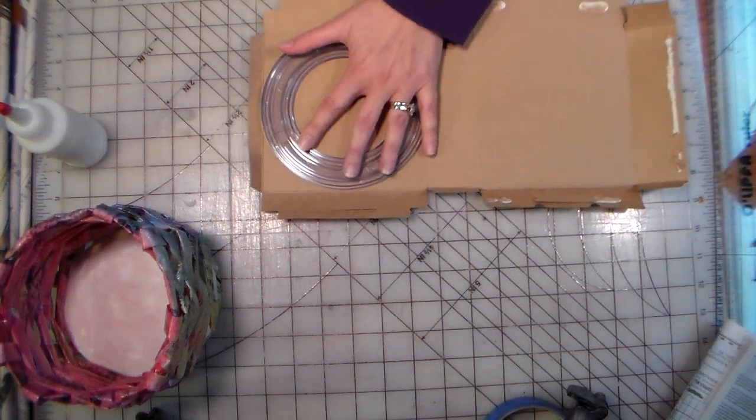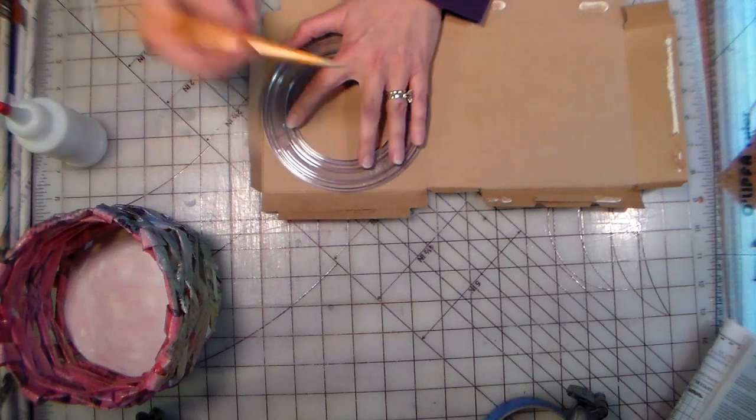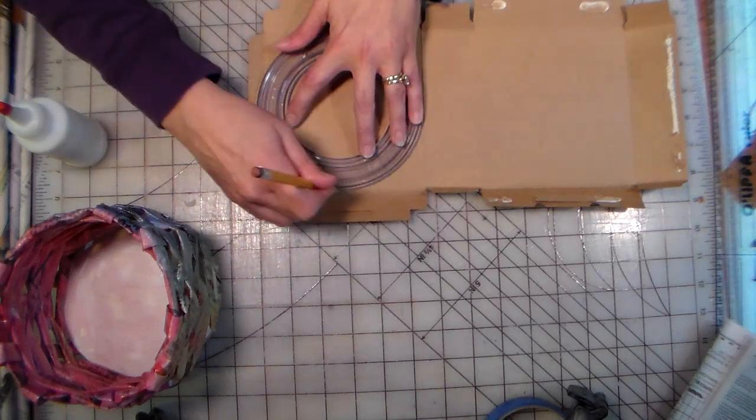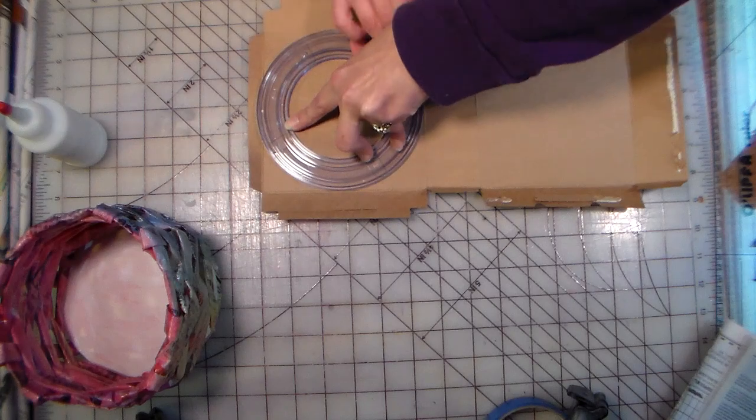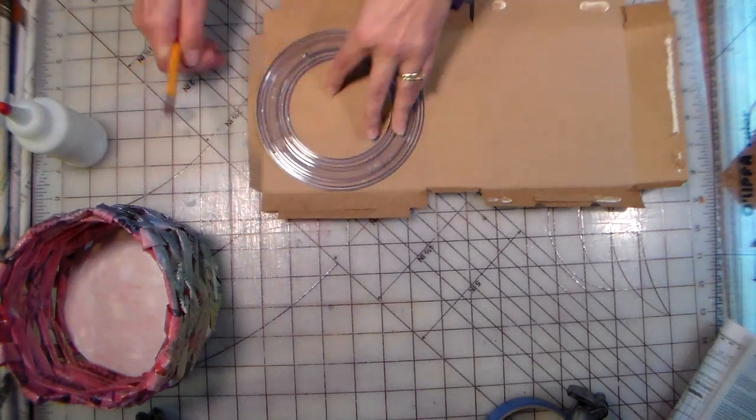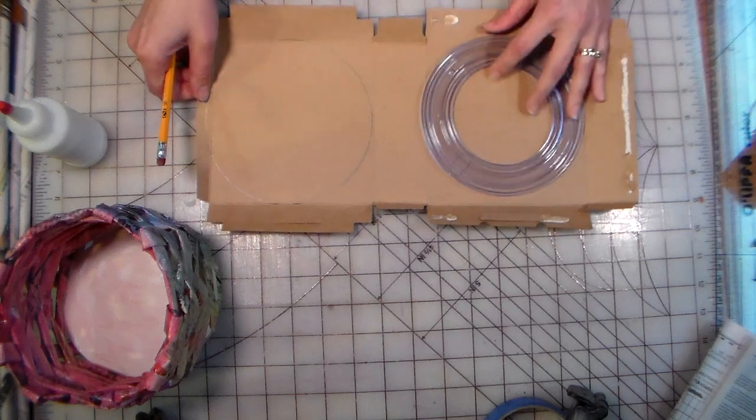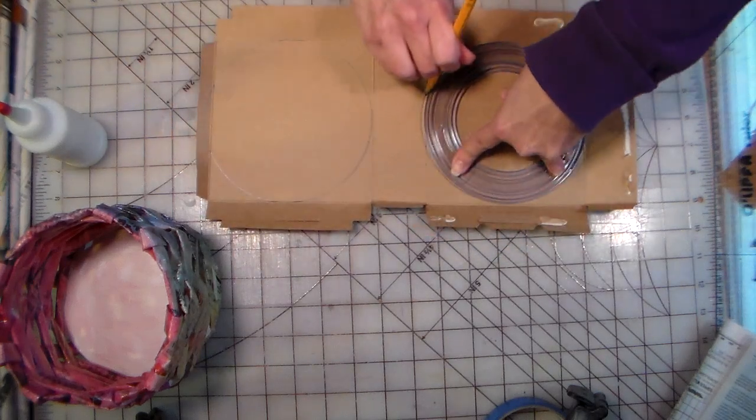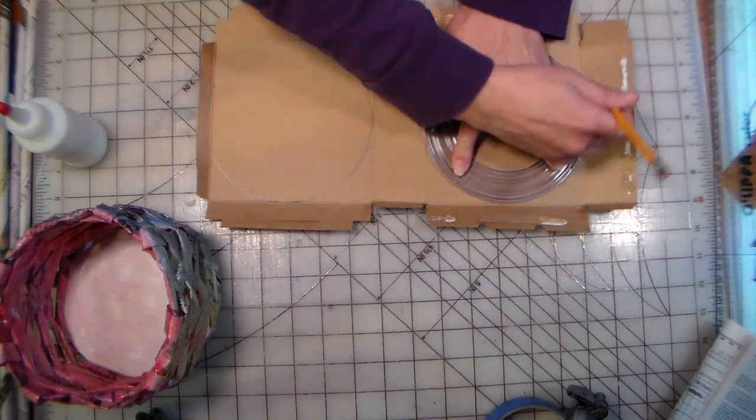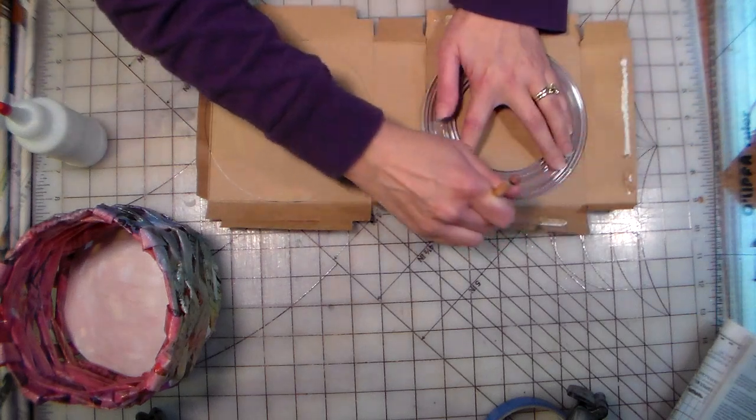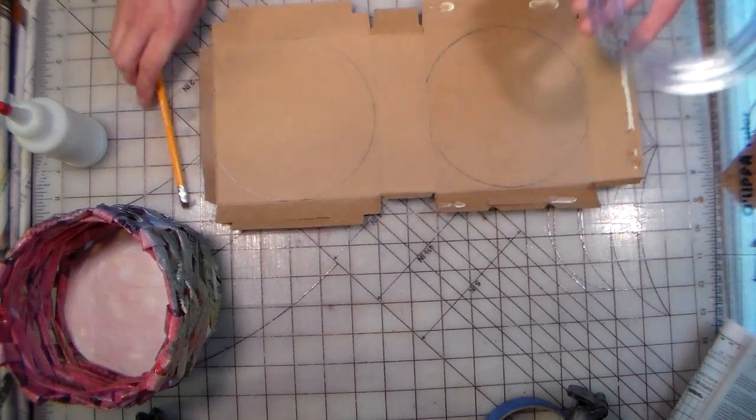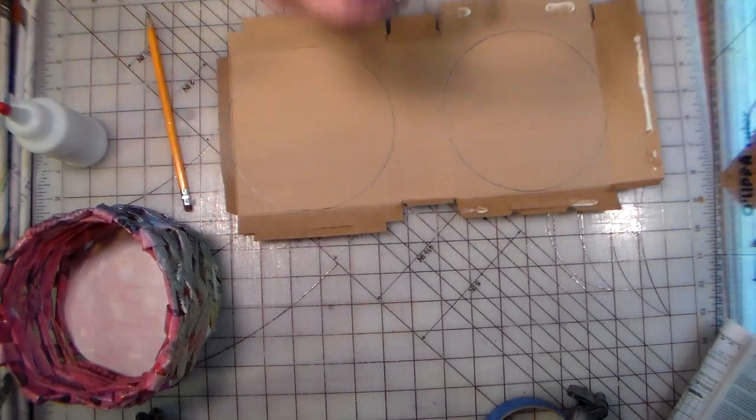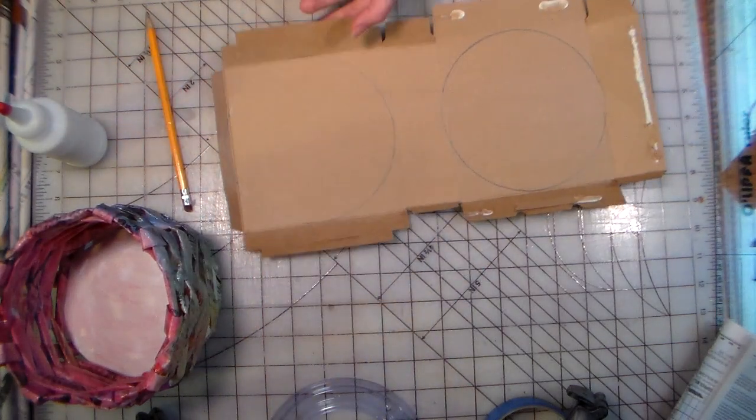Alright, then use your pencil to trace this circle two times. Remember, you can use a dinner plate, a snack plate, a roll of masking tape, anything you want to get your circle shape. You don't have to have a fancy scrapbooking template like I'm using. Any circle will work just fine, and you can use different things to make different sized baskets. You could trace a coffee mug and make a pencil cup. You could trace something bigger and make a big yarn basket. Think of all the wonderful presents you can make for Christmas this year.